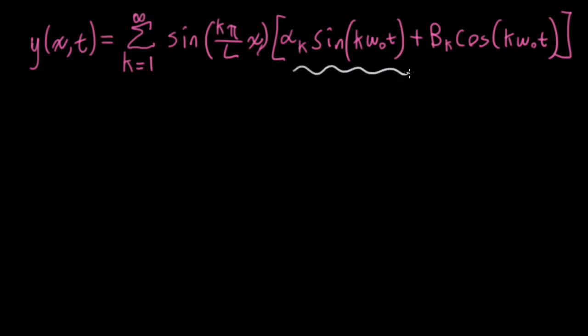Now, the alpha k terms come from the initial conditions on the position of the string, and the beta k terms come from the initial conditions of the velocity of the string. Today, I want to focus on this first term here. So we're going to talk about position, and we're going to assume that the velocity is zero. Now, we defined g(x) as the position of the string at time equals zero. So that's our initial condition.